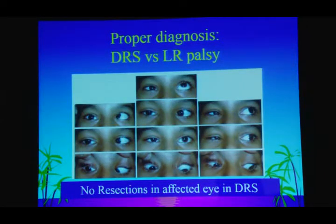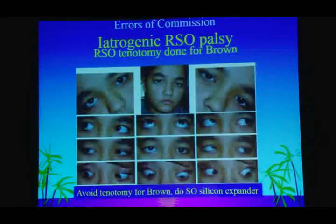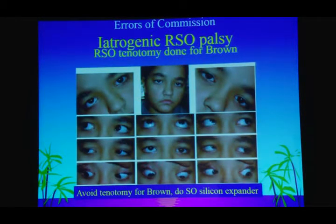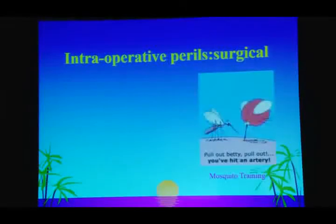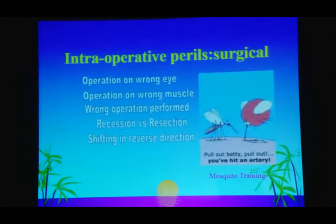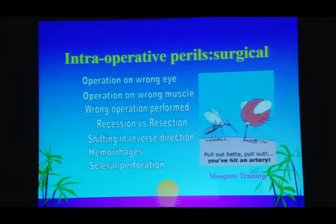In esotropias, we must rule out Duane's Retraction Syndrome and never do a resection, which will complicate matters. In planning surgery for Brown syndrome, if you do a free tenotomy, you may correct the Brown's problem but end up with superior oblique palsy — which is actually much more problematic than Brown's itself. Intraoperatively, we must be aware of the wrong eye, wrong muscle, wrong operation — recession versus resection — shifting in the wrong direction, or hemorrhages causing scleral perforation.